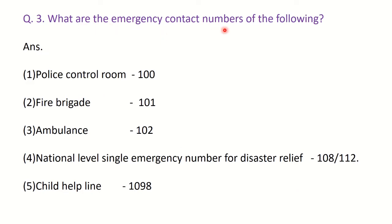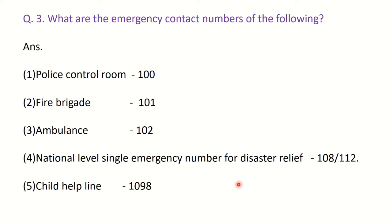Question: what are the emergency contact numbers? For police control number it is 100, Child Brigade 101, Ambulance 102. National level single emergency or disaster relief numbers are 108 and 112. Child helpline is 1098. You have to keep these numbers in mind so that you can use them in case of natural disasters.